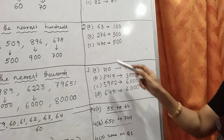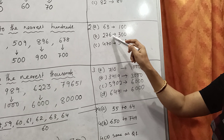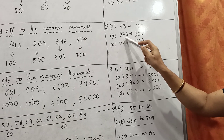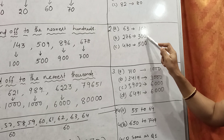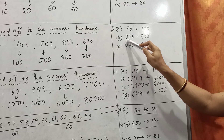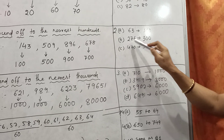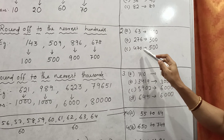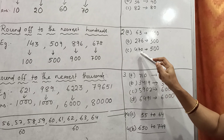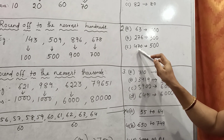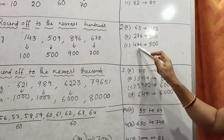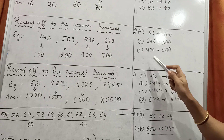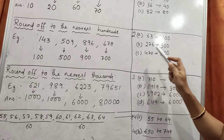The next one is 2b: 276. Here the tens digit is 7, which is more than 5. So the tens and units places become 0, 0 and the hundreds digit is increased by 1: 2 plus 1 is 3. So 276 rounded to the nearest 100 is 300. The next one is 2c: 470. Here also 7 is the tens digit, more than 5. So the tens and units places become 0, 0 and the hundreds digit is increased by 1. So 470 rounded to the nearest 100 is 500.